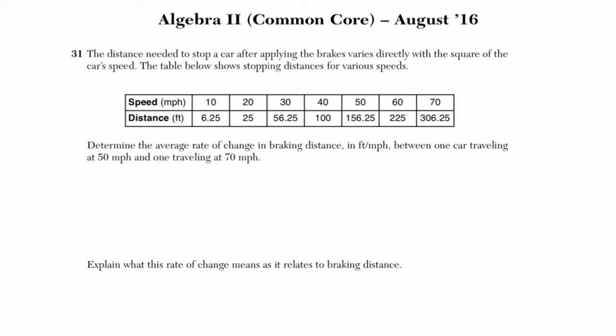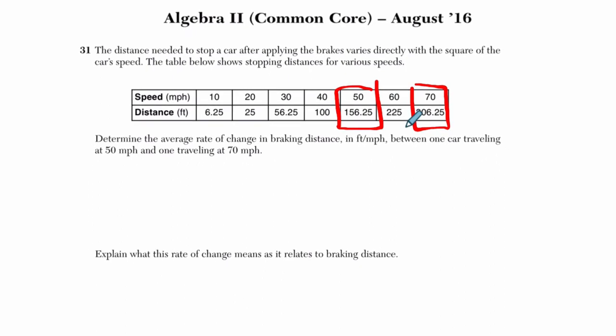Alright, so our speeds are these top numbers here. Let's compare this for a second. We've got 50 right here, braking distance is over 150 feet, but at 70 the distance required to stop is over 300 feet. It's quite a difference right there.